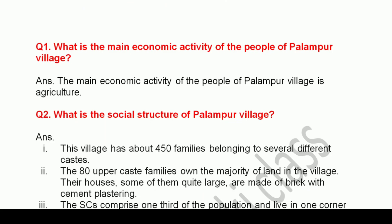So the first question is: What is the main economic activity of the people of Palampur village? The answer is agriculture, as we discussed earlier. Kyunki jaise hum ne aapko bataya ki wahan ke logon ka mukhya kaam dhanda kya hai — agriculture yaani ki kheti baari karna hai.